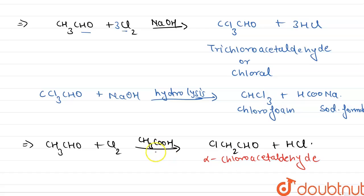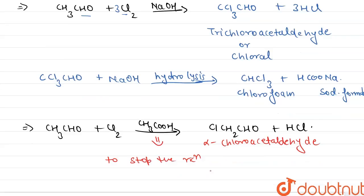Here, the main role of acid is to stop the reaction at the monohalogenation stage.